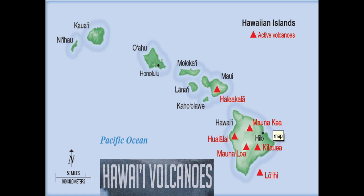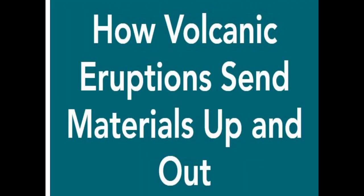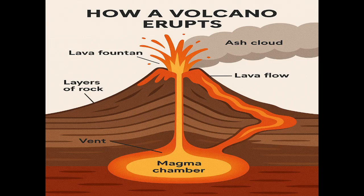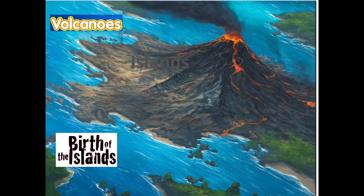Hawaiian Volcanoes — map of the active volcanoes, shown in red. How volcanic eruptions send materials up and out — an animation. How a volcano erupts: ash cloud, lava formation, lava flow, layers of rock, vent, magma chamber. The example in the middle is of an island.